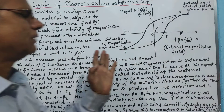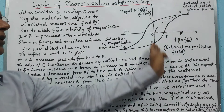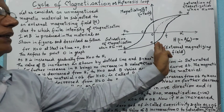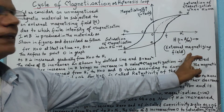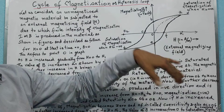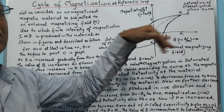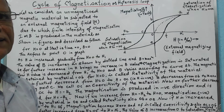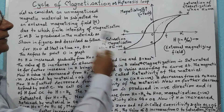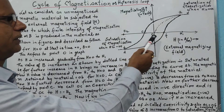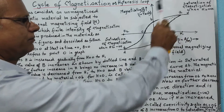Here we are going to magnetize a magnetic material. I have drawn a graph where we are plotting two factors: one is the external magnetizing field H, which is magnetizing the material, and due to that, the intensity of magnetization is produced in the material. We start with the value of H increasing from 0 to a maximum value.